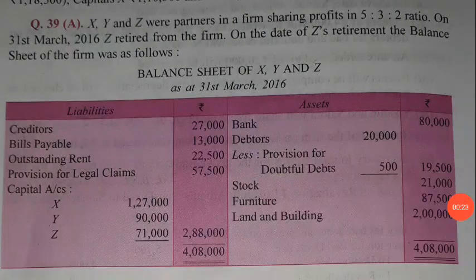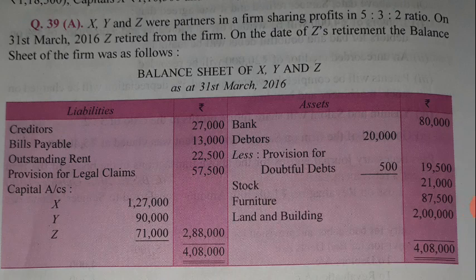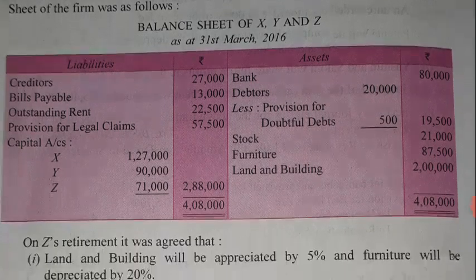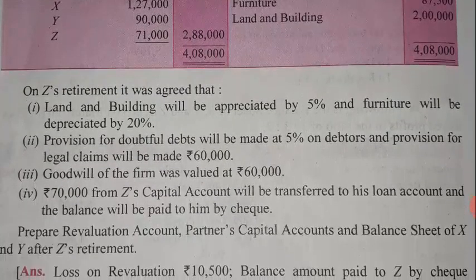Here on the screen you are watching question number 39: XYZ are partners in a firm sharing profit in the ratio of 5:3:2. On 31st March 2016, Z was retired. In the balance sheet there is no item which needs to be transferred to old partners in the old ratio, so now we will move forward to the adjustments.